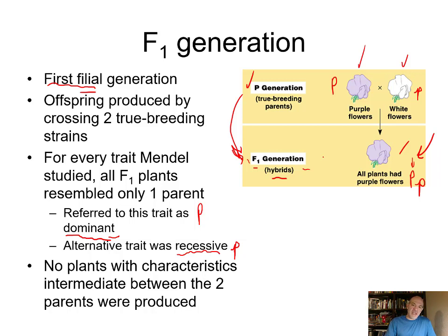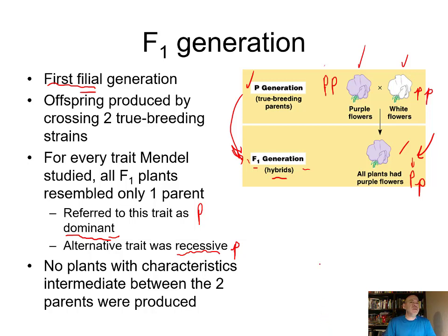Mendel called these heritable factors alleles, even though he didn't know about genes, DNA, or chromosomes. The purple flower parental generation had two dominant alleles (PP), and the white flower had two recessive alleles (pp). The F1 generation has one of each allele (Pp) — it's a hybrid — and they all look purple. Taking the F1 generation and crossing those gives the F2 generation.